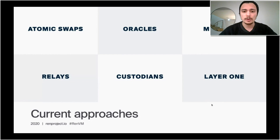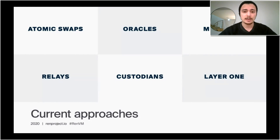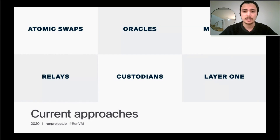There are already a few approaches to interoperability, but none of them really hit what we might call universal. There are atomic swaps, which are great for exchanging two assets — as long as you already know who you're going to exchange with, what assets you're working with, and the price, and you're okay with either party being able to cancel at any point. This is a pretty limited use case, there hasn't been huge adoption of atomic swaps, and they don't work for general applications.